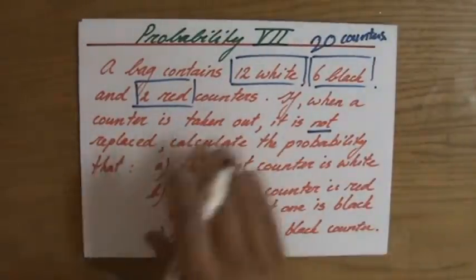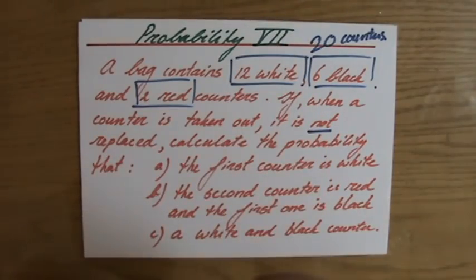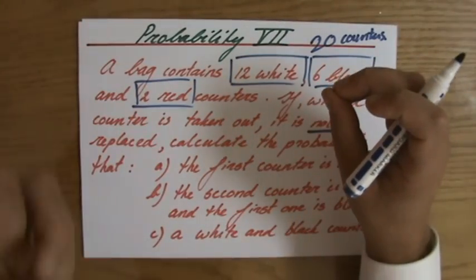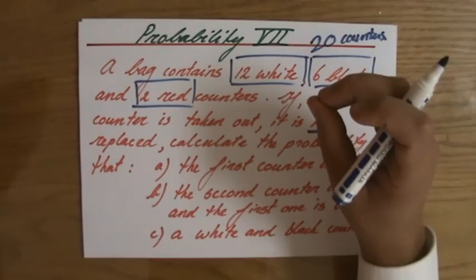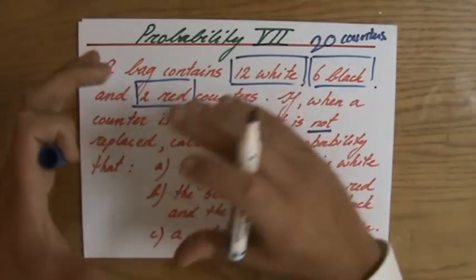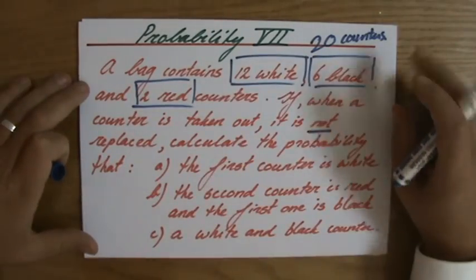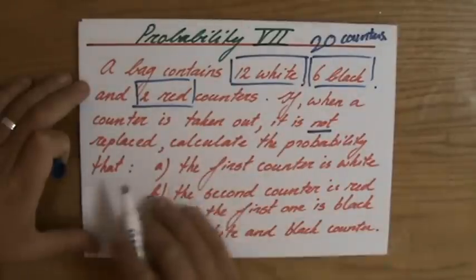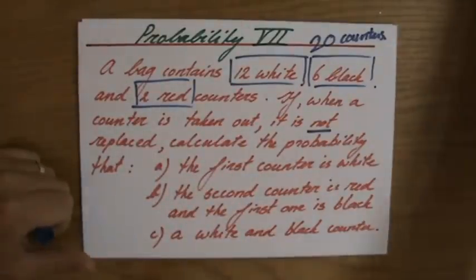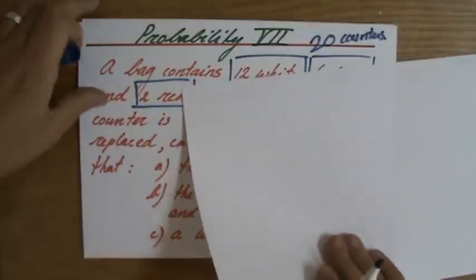But now, this is important. If, when a counter is taken out, you do not replace it. So it's taken out, and you put it on the side of the table. It's not being put back into the bag. That's very important. Calculate the probability. Well, that the first counter is white. Now, I'm going to do that on a fresh piece of paper.